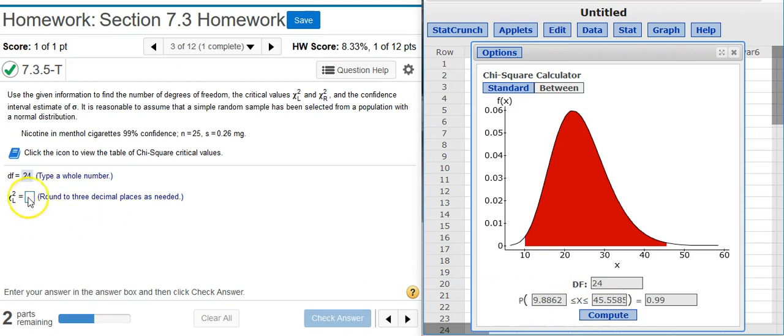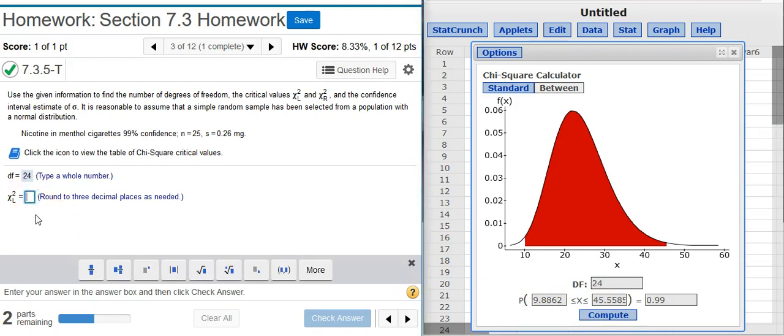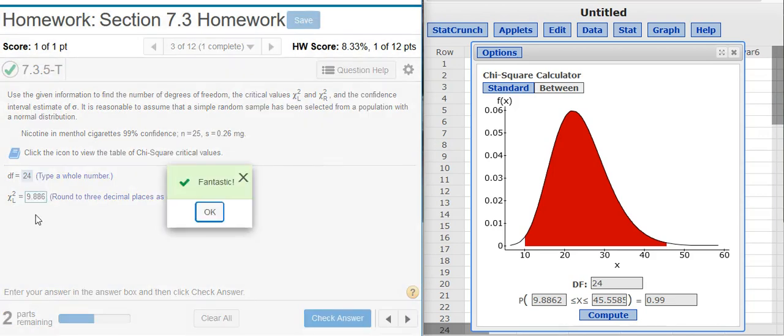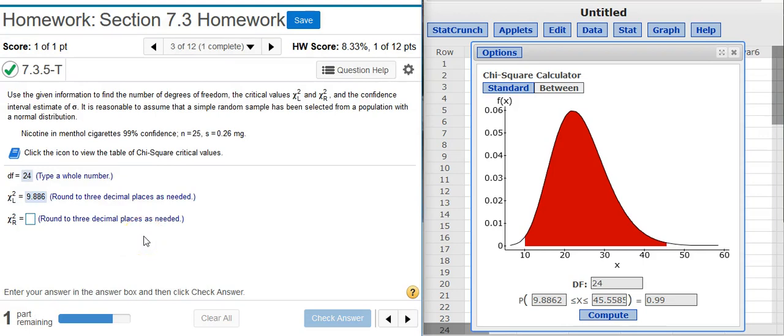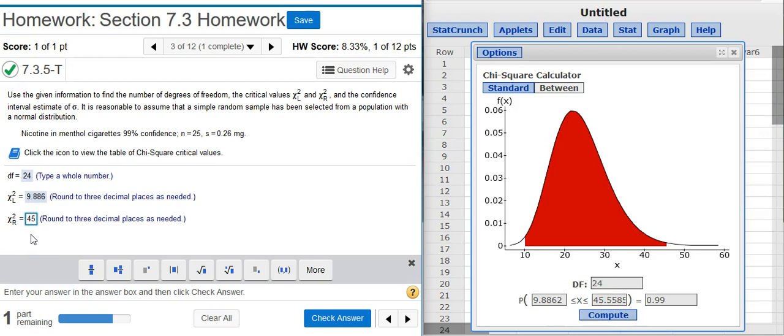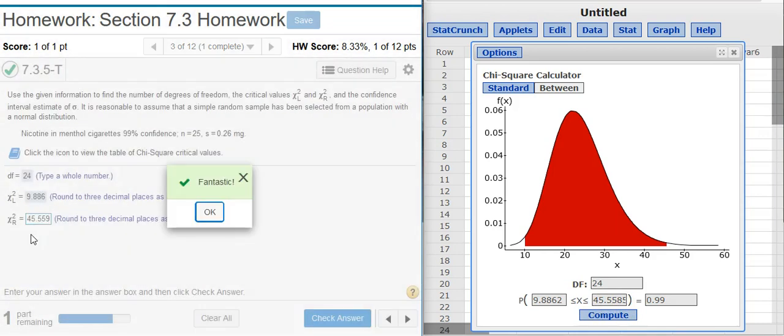The one on the left, which is the subscript L, is the one we want first. I'm asked to round to three decimal places. And now I'm asked for the other critical value, the one on the right. You can see that with the subscript R. We can just take that here from the calculator.